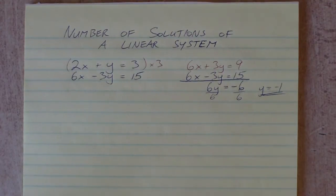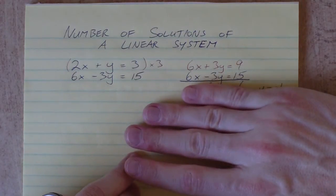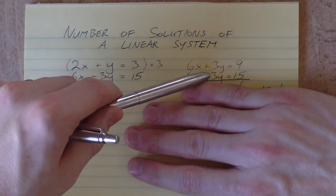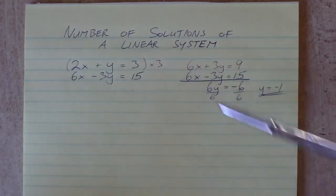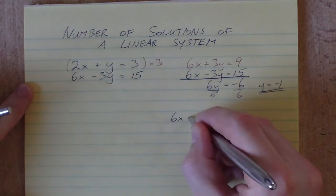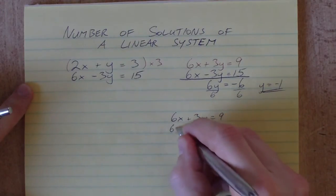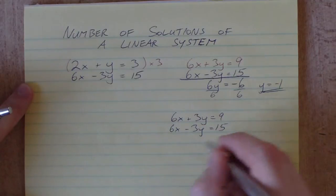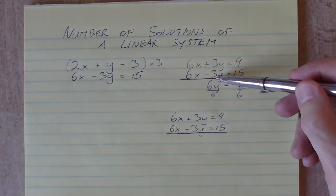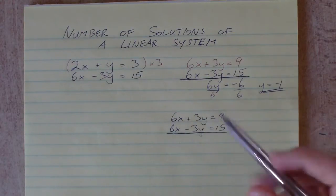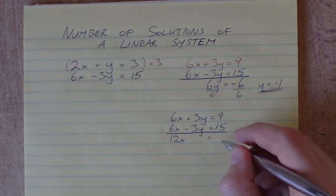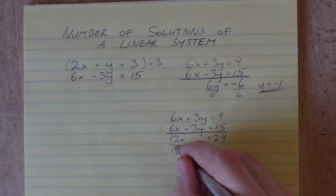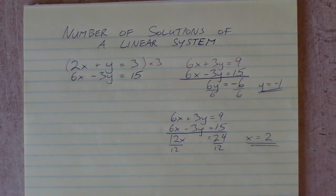That worked out well. Let's go back to these equations. I don't even have to do a second multiplication because the y values are opposites to each other. If we add the two equations, the y's will add to 0 and we'll be left with x's. Adding the equations: 6x plus 6x gives 12x, 3y plus negative 3y gives 0, and 9 plus 15 gives 24. Divide both sides by 12 and x equals 2.